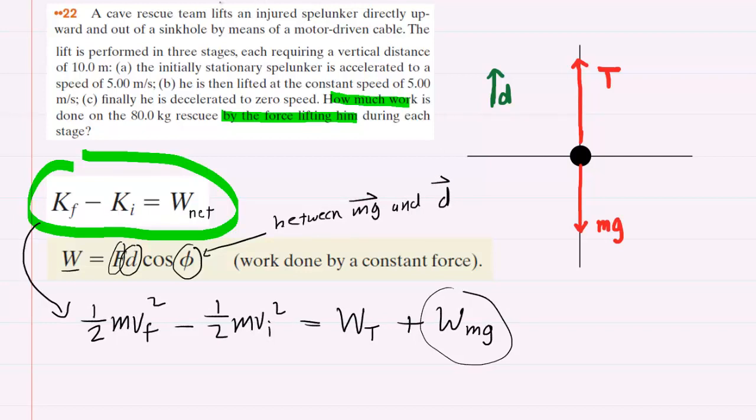Now this spelunker is being lifted upward so the displacement points straight up. Gravity of course points straight down so the angle between the gravitational force and the displacement would be 180 degrees. So let's keep that in mind.